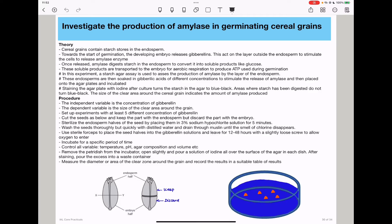Once amylase is released, it digests starch in the endosperm to convert it into soluble products like glucose. These soluble products are transported to the embryo for aerobic respiration to produce ATP used during germination.